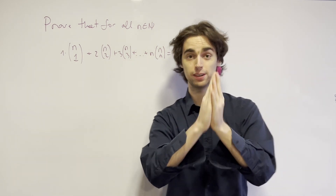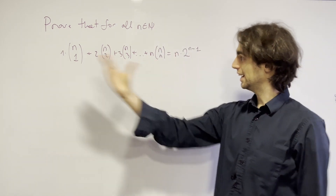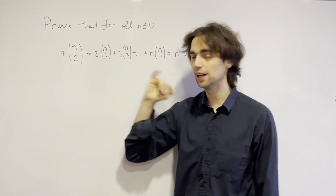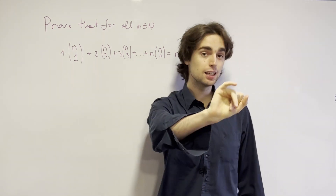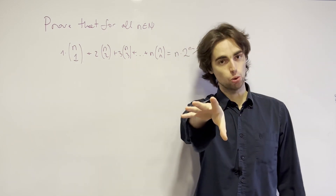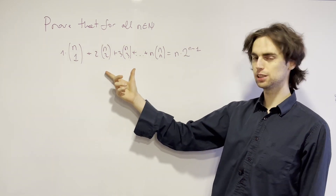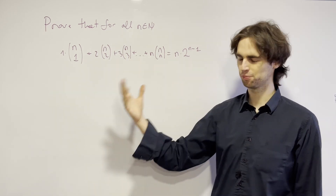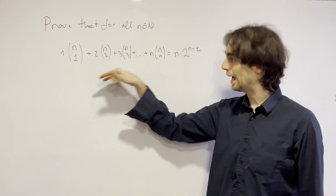Hello fellow problem solvers. Today we're going to be doing a problem that's an identity — prove this identity in combinatorics. I suggest you try this problem out for a minimum of 5 minutes, ideally 20, not more than an hour. If you'd like to go along with us, give it a go for the next 5 minutes. What ideas do you have here? Now without further ado, let's begin.